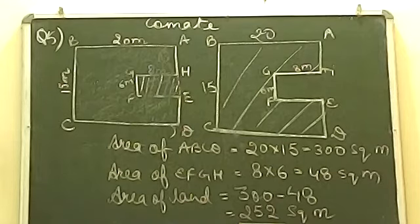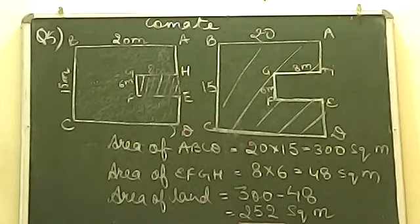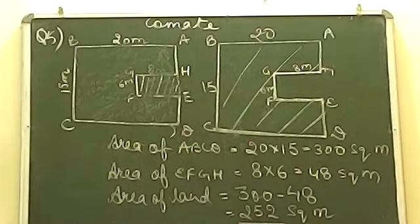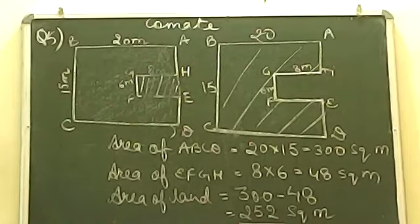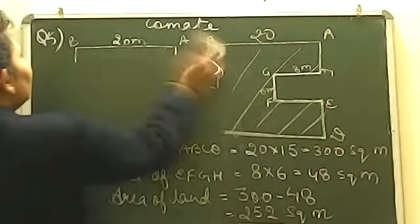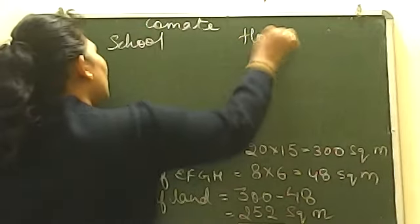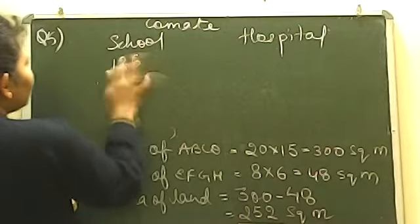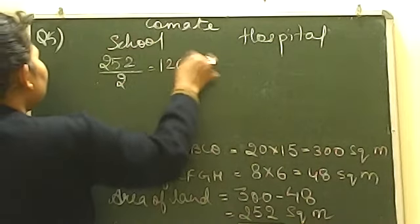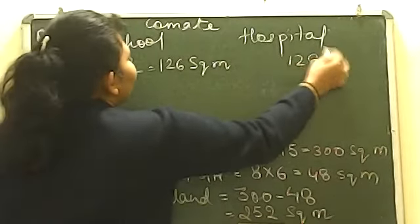If we divide 252 into two equal parts, the answer is 126. So 252 divided by 2 gives us 126 square meters. The school will get 126 square meters and the hospital will also get 126 square meters.